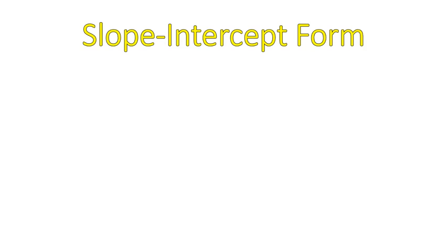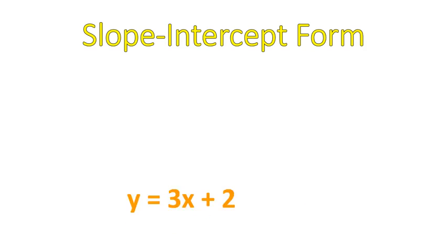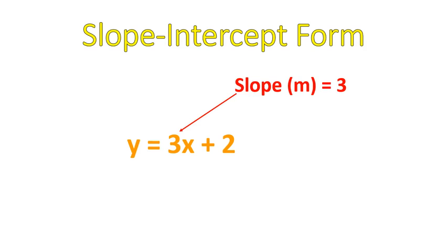Let's go ahead and take a look first at our slope-intercept form of a line. A quick review, the slope-intercept form of a line is written like this: y equals mx plus b, where slope is your m value, and your y-intercept is the number off the end. So in an example equation, y equals 3x plus 2, your slope would be 3, and your y-intercept would be 2, or the point (0, 2).